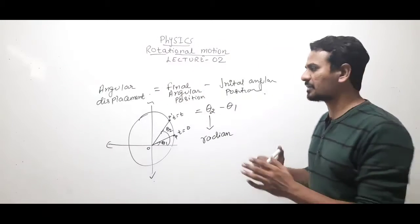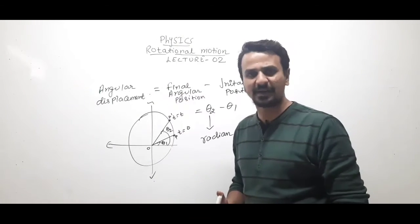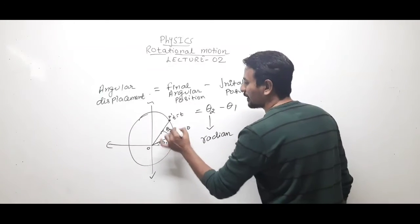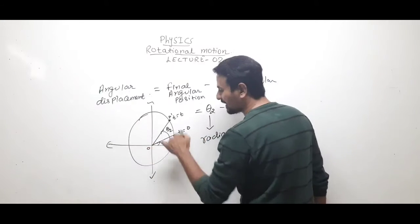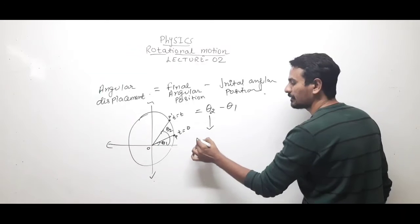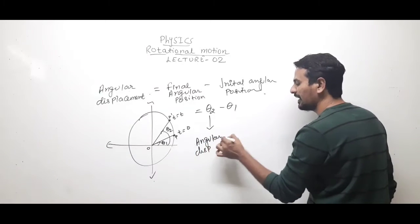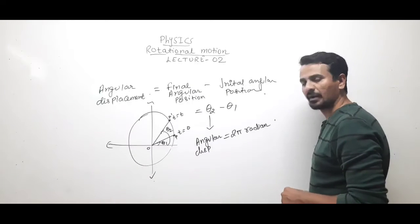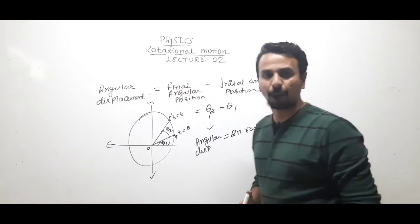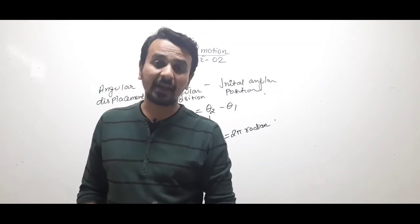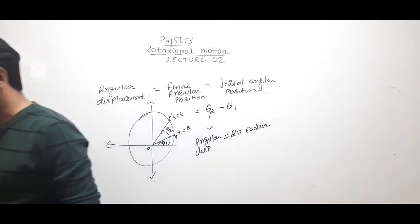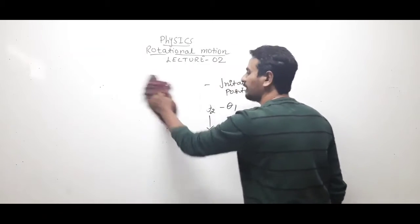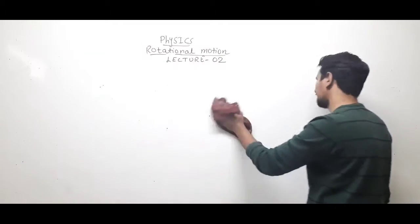Angular displacement is a vector quantity whose direction can be found by the right-hand screw rule. Its unit is radian. If a particle completes one full rotation, the angular displacement will be 2π radians or 360 degrees. Now we will understand angular velocity, angular acceleration, and the relation between linear and angular velocity.